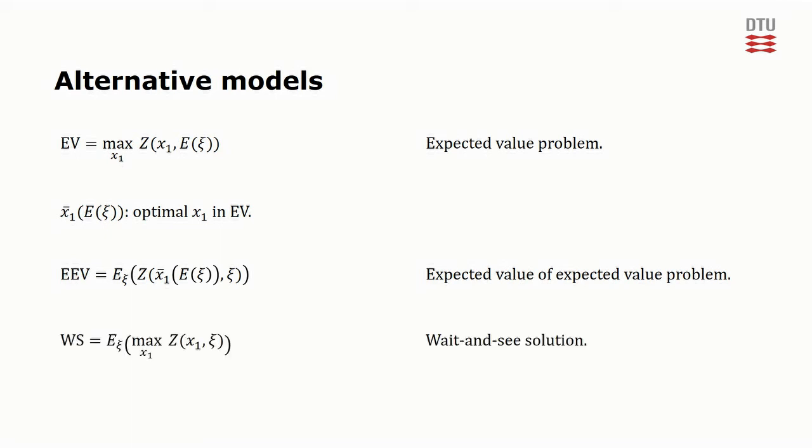Finally, we define WS as the wait-and-see solution. This one is slightly different from the others, as it assumes that we can completely eliminate the stochasticity of the problem. The idea being that we do not need to fix any of the variables before knowing the true value of the parameters. Essentially all variables become stage 2 variables.